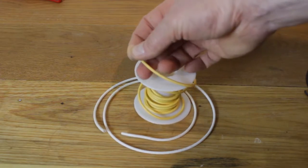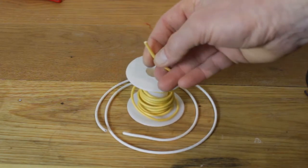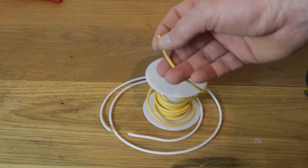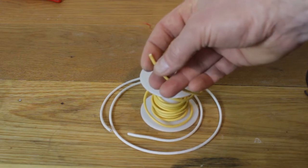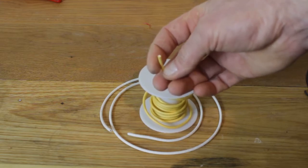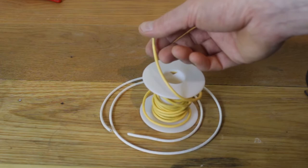So this wire we have here has a cloth outer but it actually has a PVC inner layer, so when you strip it you actually have to strip the two layers and the PVC layer gives it the modern standards. It helps it meet the modern standards and the cloth gives it that authentic vintage look.